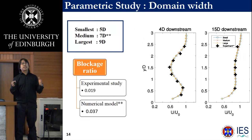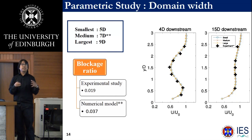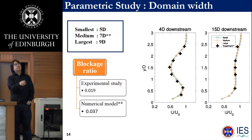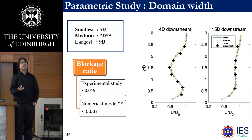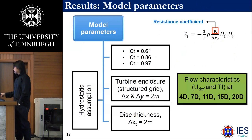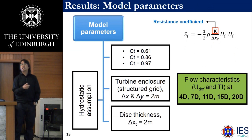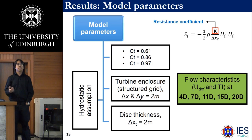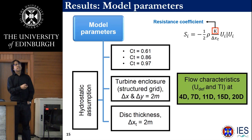Domain width is important because it relates to the blockage ratio of the model. The experimental study had a blockage ratio of about 0.019. Testing three domain width values gave quite identical results, meaning the tested values had no significant influence on the model, so I used the medium domain width to save computational time. Next, I tested the resistance coefficient K, which is the most important parameter when implementing the actuator disk approach. Three values were tested from 0.61 to 0.97, with the turbine enclosure grid stride set constant at 2 meters.